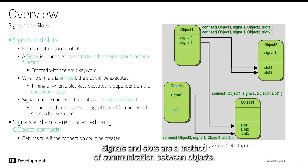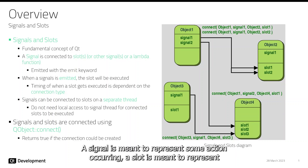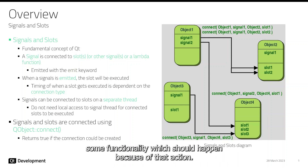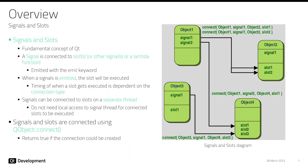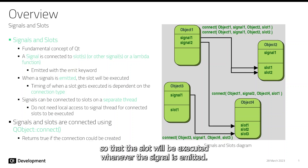At a high level, signals and slots are a method of communication between objects. A signal is meant to represent some action occurring. A slot is meant to represent some functionality which should happen because of that action. The signal is then connected to the slot, so that the slot will be executed whenever the signal is emitted.